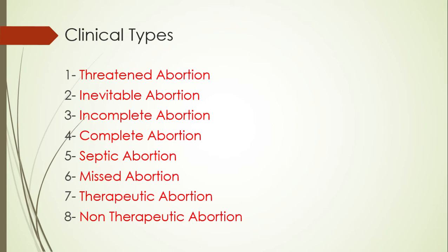Complete abortion means that the abortion is completed — all the contents of the pregnancy are expelled, the uterus becomes well contracted and empty, the cervix is closed, with minimal pain and bleeding. A specific type is cervical abortion, in which the product of conception leaves the uterine cavity and distends the cervix, so the cervix becomes ballooned and dilated between the internal and the external os. It is characterized by severe pain.